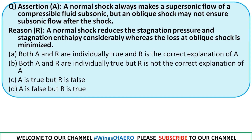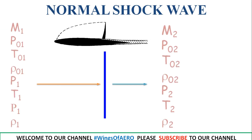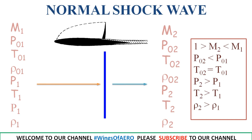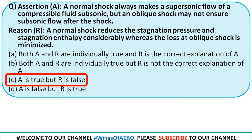Assertion: a normal shock wave always makes supersonic flow subsonic, but an oblique shock wave may not ensure subsonic flow after the shock. Reason: a normal shock wave reduces stagnation pressure and stagnation enthalpy considerably, whereas the loss at an oblique shock wave is minimized. Assertion A is correct, but Reason R is completely wrong — there is no reduction in stagnation temperature or stagnation enthalpy across the shock.